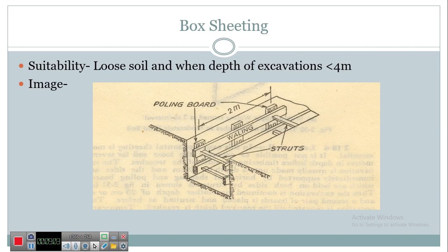Another method is box sheeting. Its suitability is for loose soil where depth of excavation is up to four meters. In this method, as soil is loose, vertical sheets — polling boards — are placed nearest to each other, about two meters apart with three polling boards in that span, sometimes touching each other. Horizontal timber supports — walling or planks — are provided, and the walling in turn is supported by struts in two to three layers.